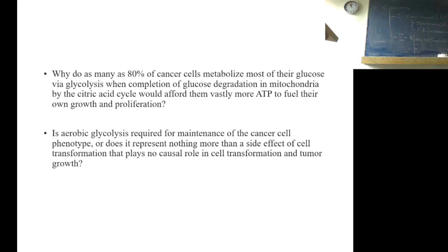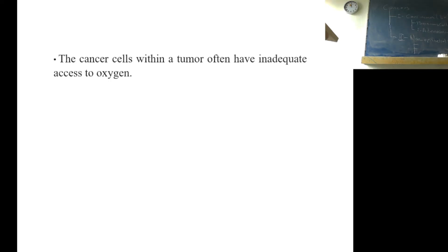When completion of glucose degradation in mitochondria by the citric acid cycle would afford them vastly more ATP to fuel their own growth and proliferation? Is aerobic glycolysis required for maintenance of cancer cell phenotype or does it represent nothing more than a side effect of cell transformation that plays no causal role in cell transformation or growth? The cancer cells within a tumor often have inadequate access to oxygen.